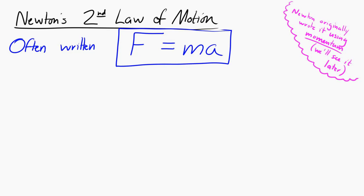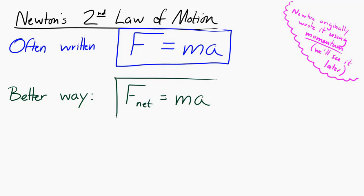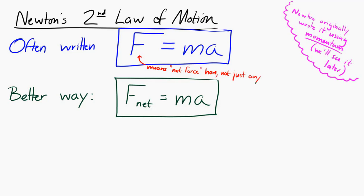Second of all, F equals MA is a little bit misleading. In my opinion, there are two better ways to write this. One way is F net equals MA. The reason why this is better is because the F in F equals MA actually stands for the net force — it's not just any force, it's not just a single force, it's the sum of all the forces acting on an object. M is equal to the mass of the object, and A is equal to the acceleration of the object.